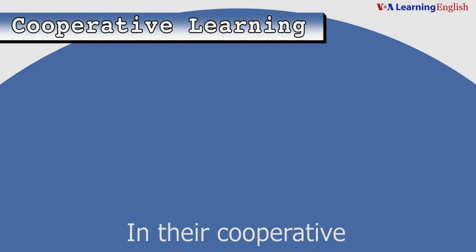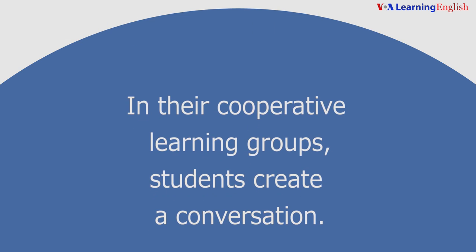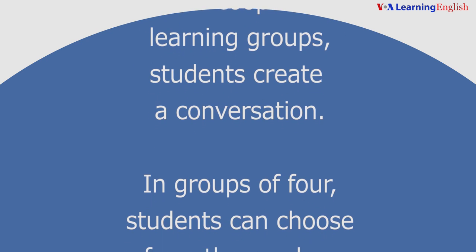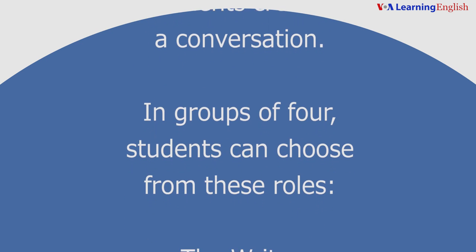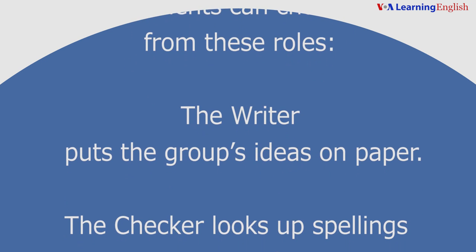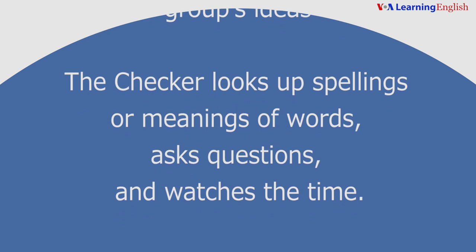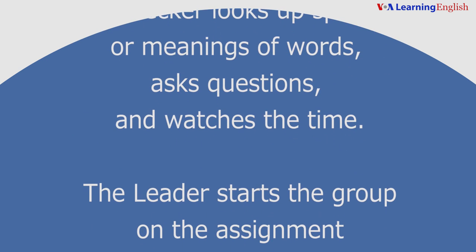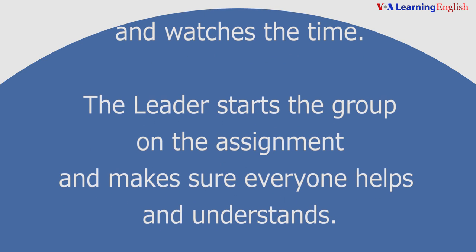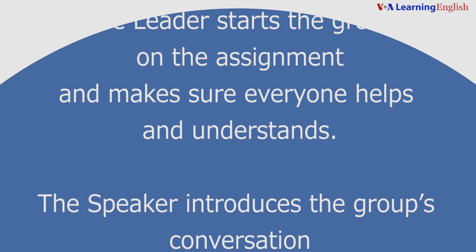Cooperative Learning. In their cooperative learning groups, students create a conversation. In groups of four, students can choose from these roles. The writer puts the group's ideas on paper. The checker looks up spellings or meanings of words, asks questions, and watches the time. The leader starts the group on the assignment and makes sure everyone helps and understands.